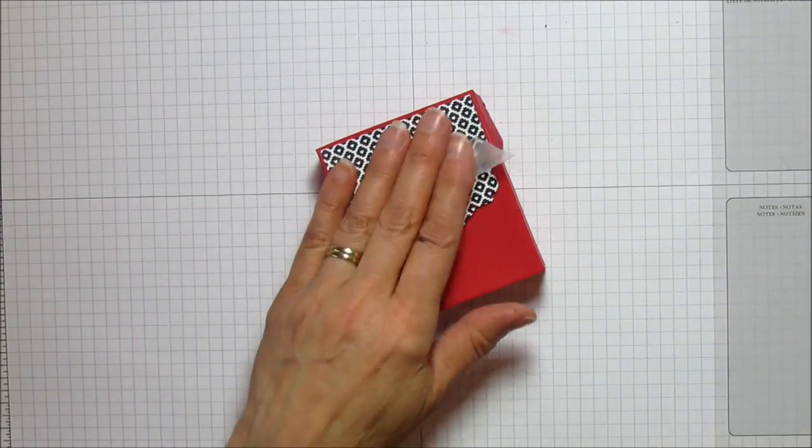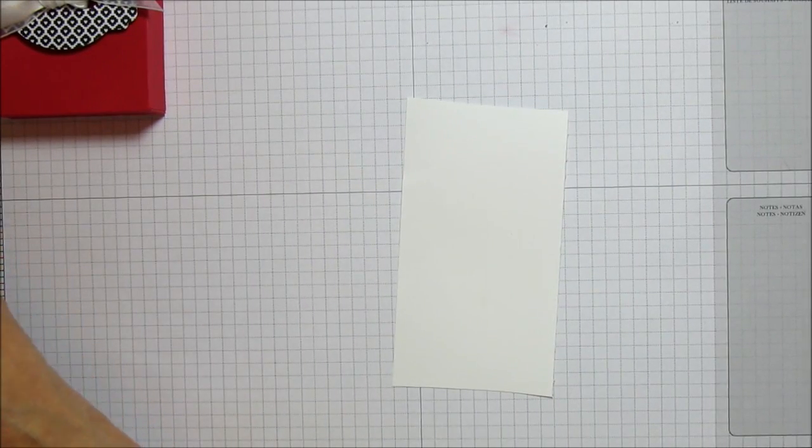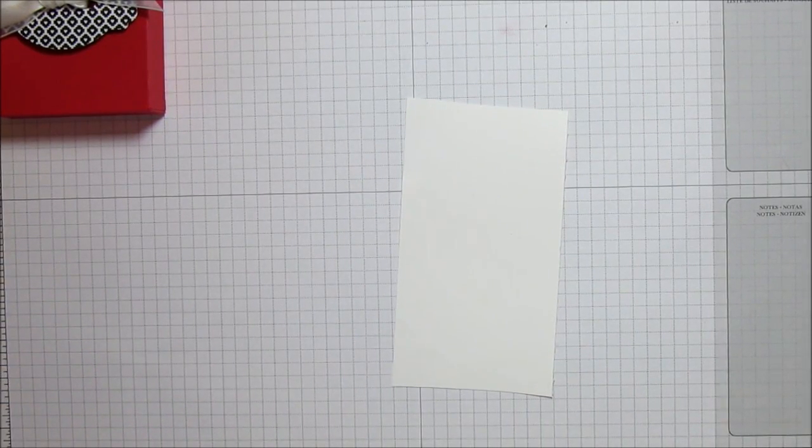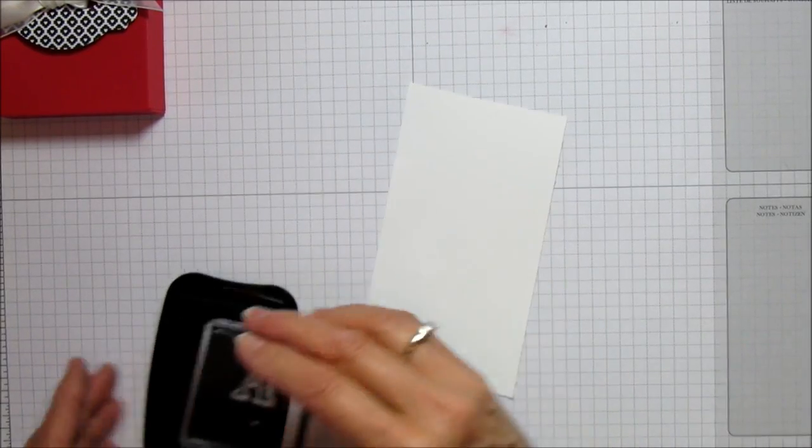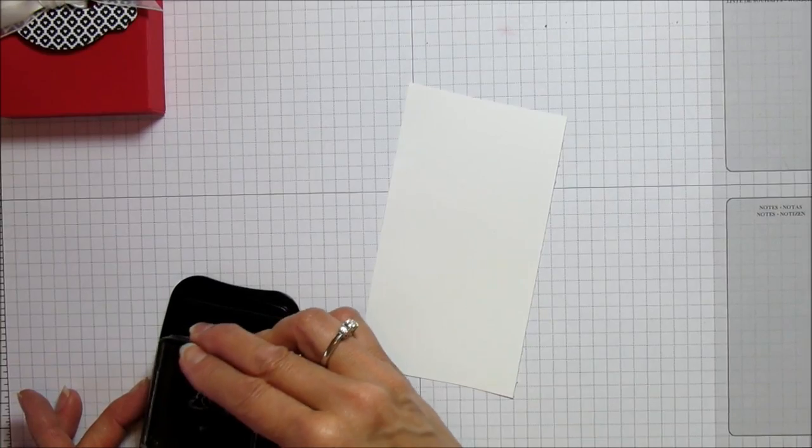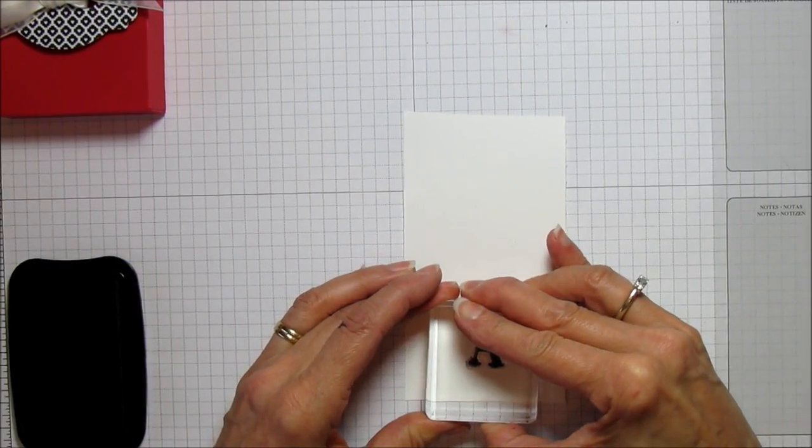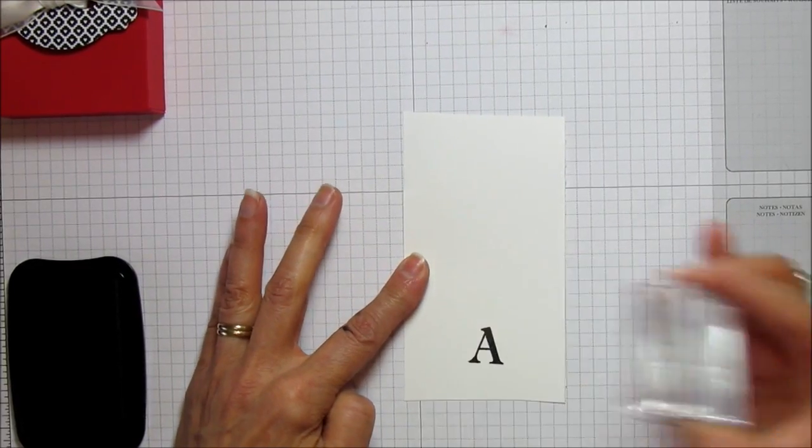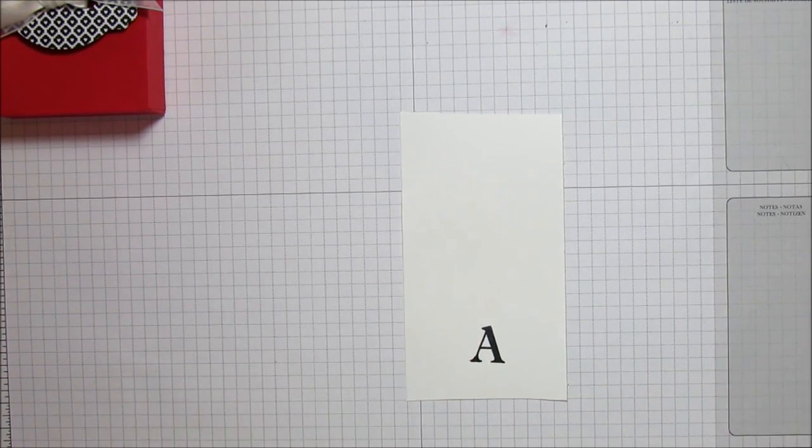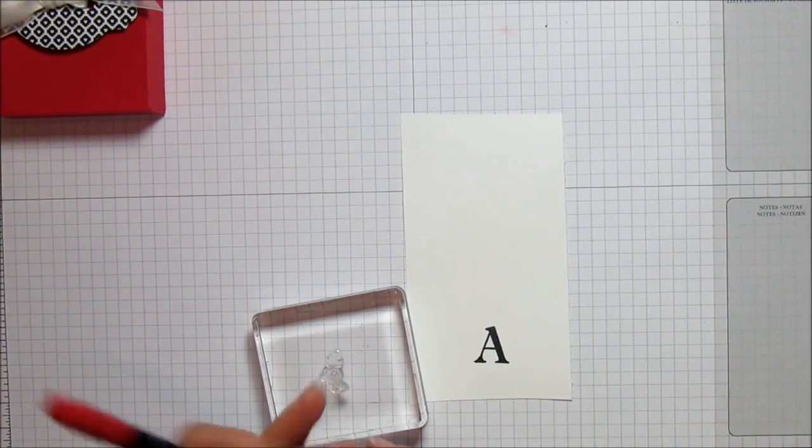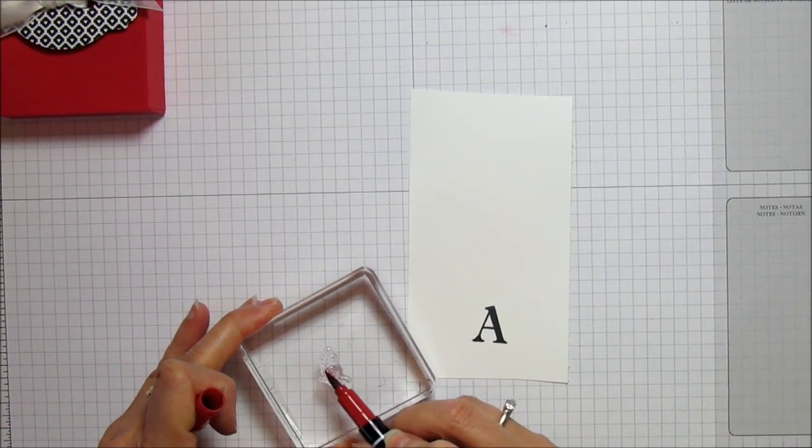Now we're ready to start stamping our little monogram. I'll set that aside. The first thing I'm going to do is use some memento black - you can use whatever color you like. This one I'm doing my initial, so you have the A, and then with the little flower I'm using our stamp and write markers. This one is the real red and I'm just doing the rose.